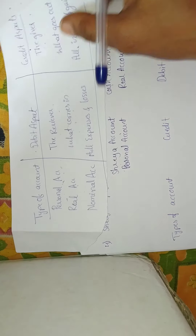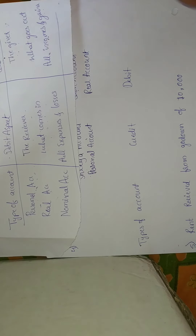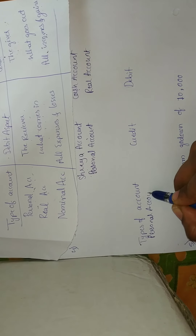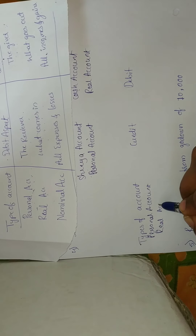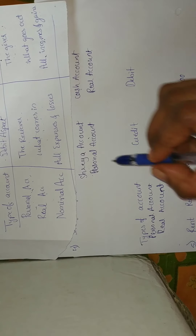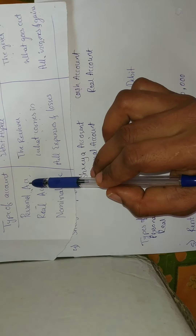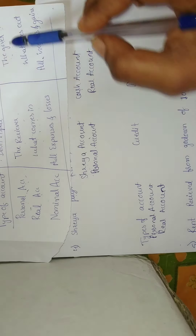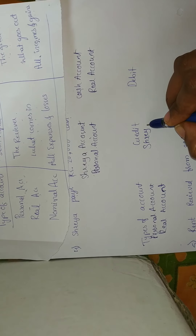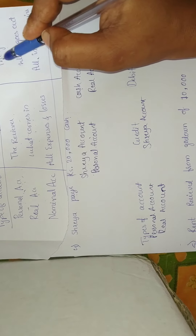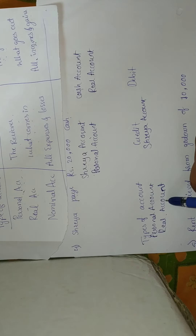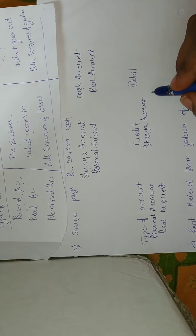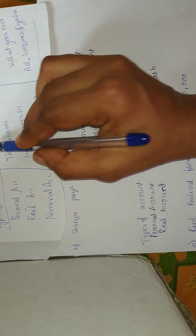After identifying the accounts, we determine debit or credit. Shreya account comes under personal account — Shreya is paying to the owner, so she is the giver, and the giver comes under credit. Therefore Shreya account comes under credit. Cash account comes under real account — cash is received by the company, so what comes in for the business comes under debit. Cash account is debited.